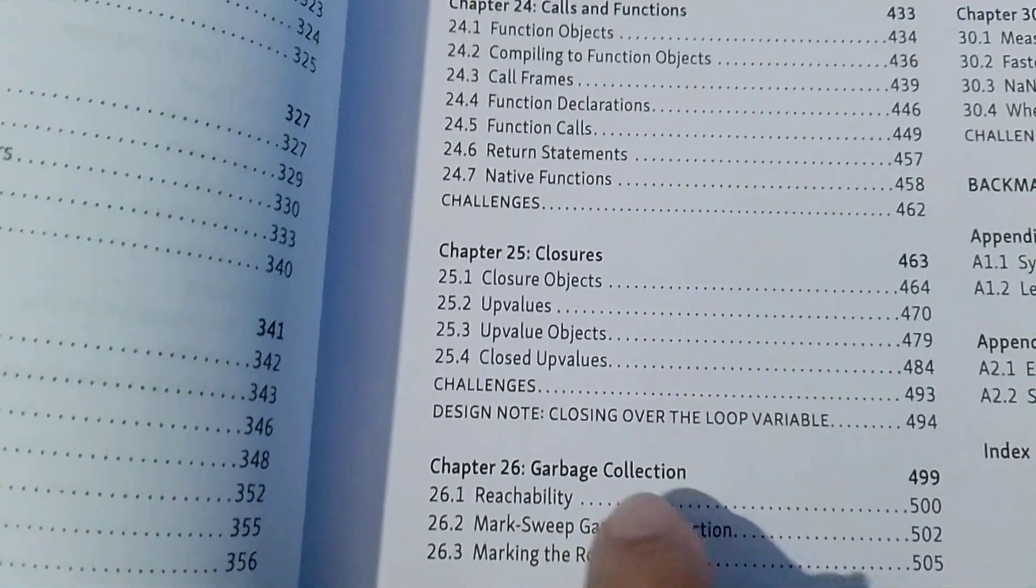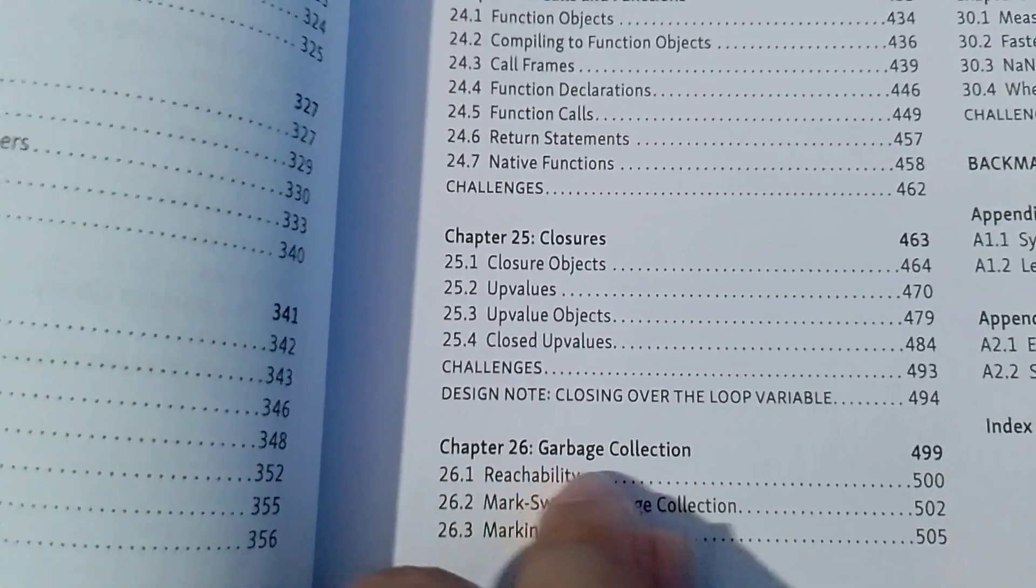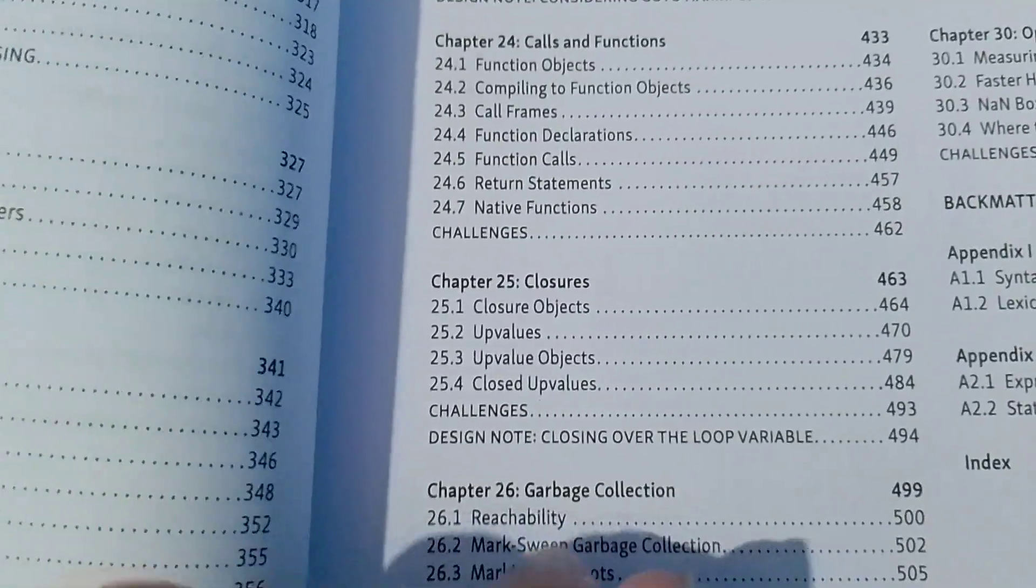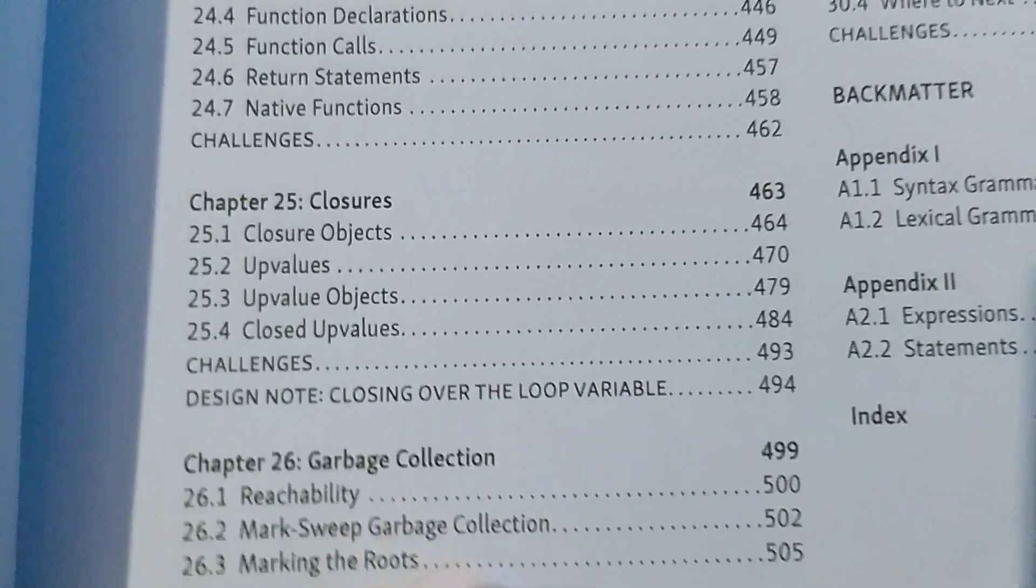Because, as you might know, Java already has a garbage collector, so we don't have to write it by ourselves. Java already gave it to us. But, in C, we are going to implement this by ourselves.